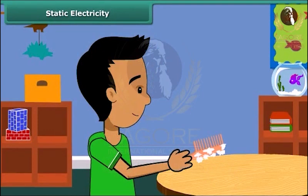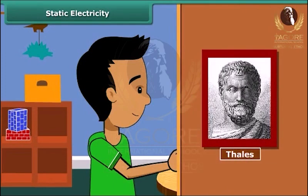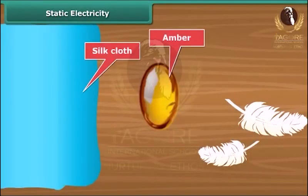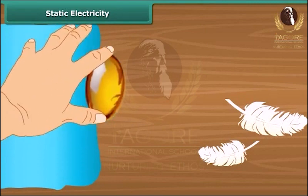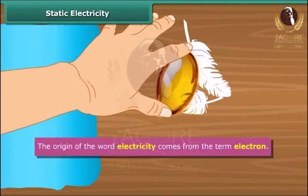This was first noticed by a Greek man named Thales over 2500 years ago. Thales found that amber attracted tiny feathers after it was rubbed with silk cloth. This was due to static electricity. The origin of the word electricity comes from the term electron.